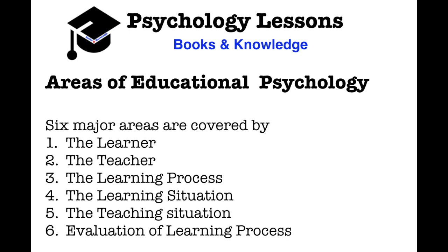Evaluation of the learning process is also very important. You just cannot keep teaching — you have to evaluate in between whether the learning process is effective or not. The main objective of education is all-round development of a learner. It includes cognitive, affective, and psychomotor aspects of personality. The brain of the student should be invoked, and the learning process should be evaluated so that the student grasps all that is taught. These are the six major areas covered by educational psychology.